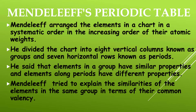The next modification in classification was given by Mendeleev. Mendeleev arranged the elements in a chart in systematic order of increasing atomic weights. He divided the chart into eight vertical columns known as groups, and seven horizontal rows known as periods. Elements in a group have similar properties, while elements along periods have different properties.